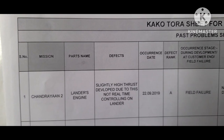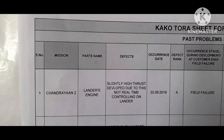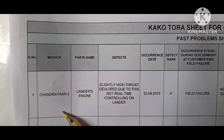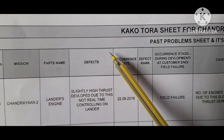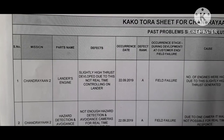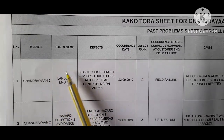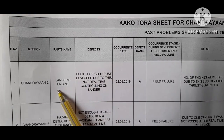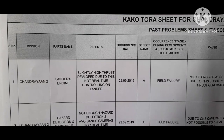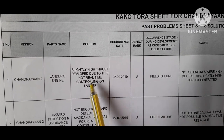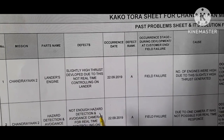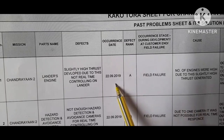Talking about Chandrayaan Mission 2: here serial numbers are given, mission is Chandrayaan 2, part name is the lander's engine. The defect that occurred in Chandrayaan 2 lander engines is slightly high thrust developed. Due to this, speed increased, and real-time controlling was not possible in the Chandrayaan 2 mission.